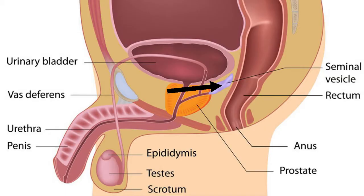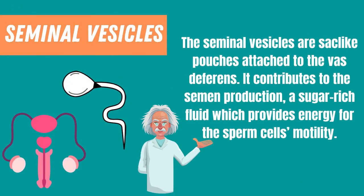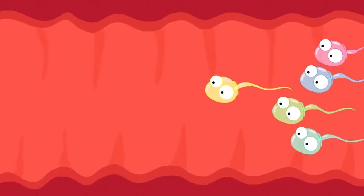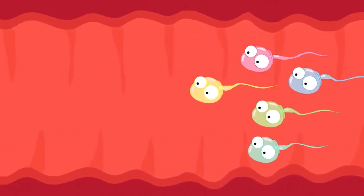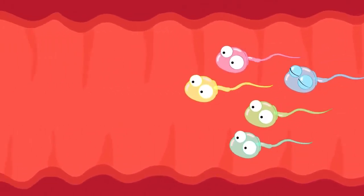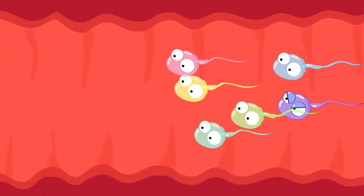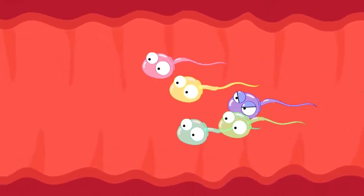Next are the seminal vesicles. The seminal vesicles are sac-like pouches attached to the vas deferens. They contribute to semen production — a sugar-rich fluid which provides energy for the sperm cells' motility. Motility of the sperm refers to the capacity of the sperm to move inside the female reproductive organ.